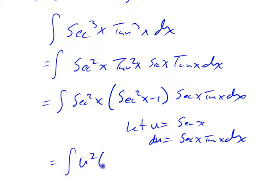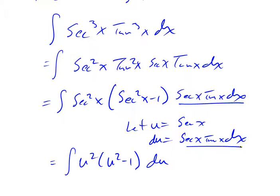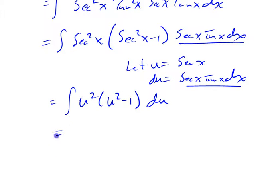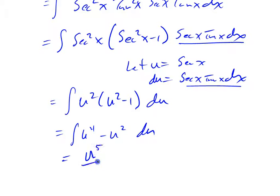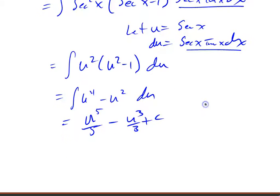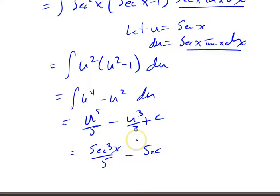This now looks like u squared times (u squared minus 1) du. Distributing: u⁴ minus u² du, which integrates to u⁵/5 minus u³/3 plus a constant. Substituting back with u equals secant x: secant to the fifth x over 5 minus secant cubed x over 3 plus a constant.